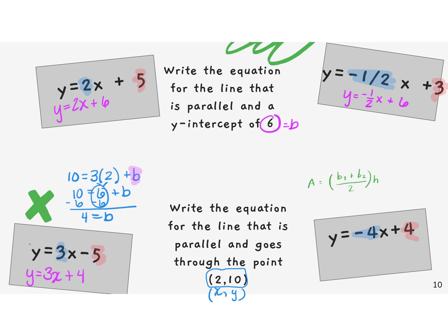Let's do it again. We have y equals negative 4x, and we put in the values: 10 equals negative 4 times 2 plus b. Order of operations gives us 18 equals b. So continuing to write our equation: y equals negative 4x plus 18. And that is parallel lines.